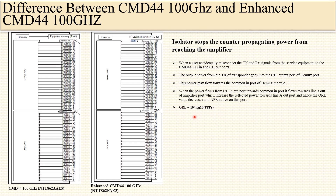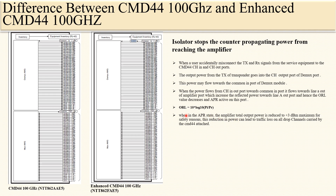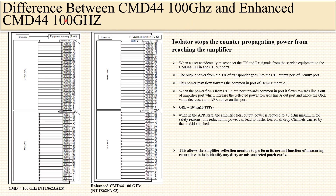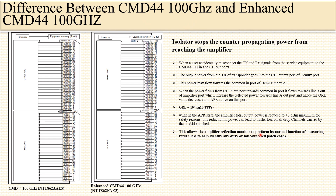The overall return loss value can be calculated from the formula: ORL = 10 × log10(Pi / Pr), where Pi is incident power and Pr is reflected power. When the amplifier is in APR state, the total output power is reduced by +3 dB for safety, and this reduction in power can lead to traffic loss on all drop channels carried by the attached CMD44. The isolator is therefore a very important feature of the enhanced CMD44, as it allows the amplifier reflection monitor to perform its normal function of measuring return loss to help identify any misconnected patch cord.